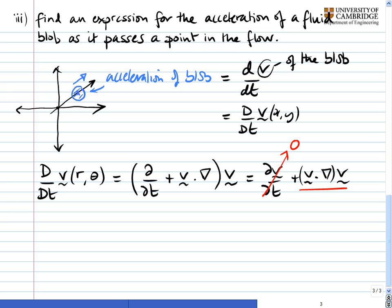So let's expand out, first of all, the v dot grad. The v is e_r v_r. There is also the e_theta v_theta term, but as we know already, that goes to 0.